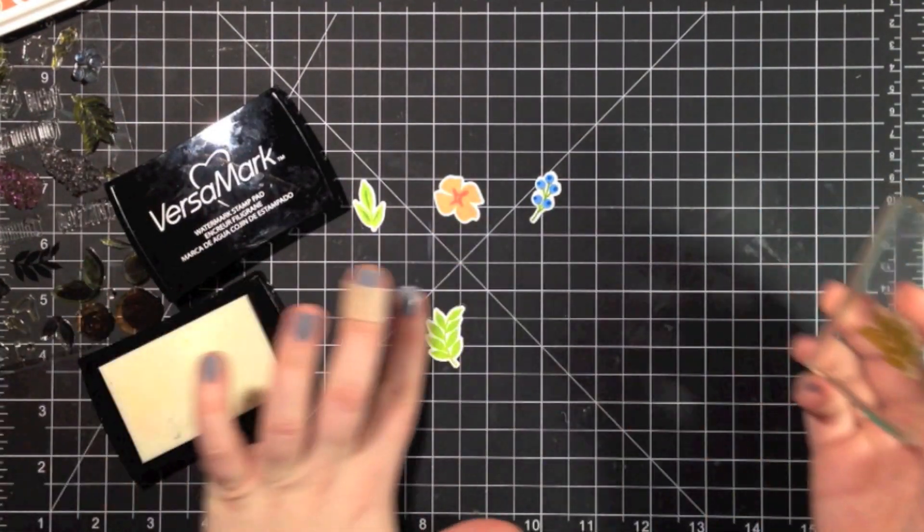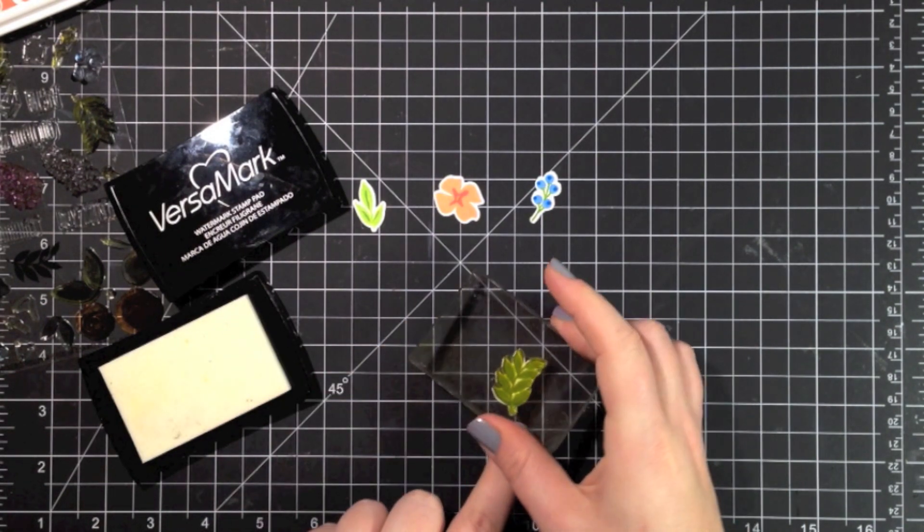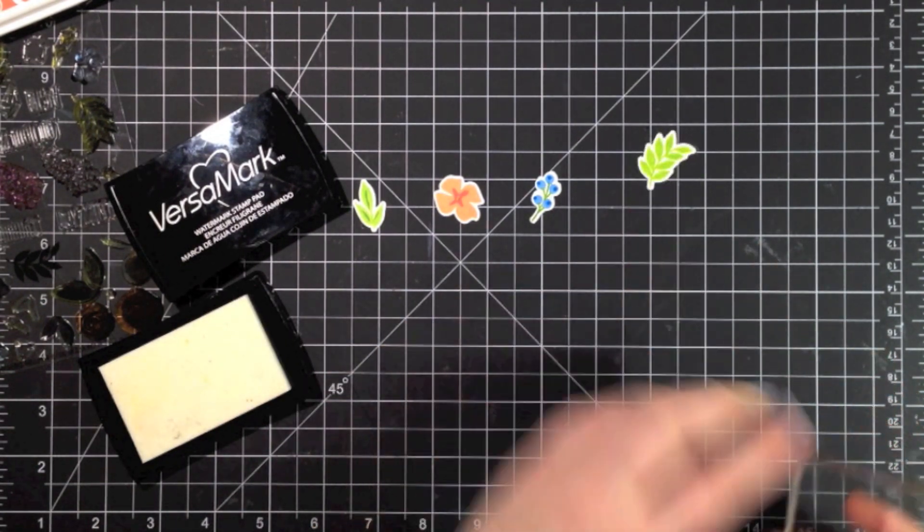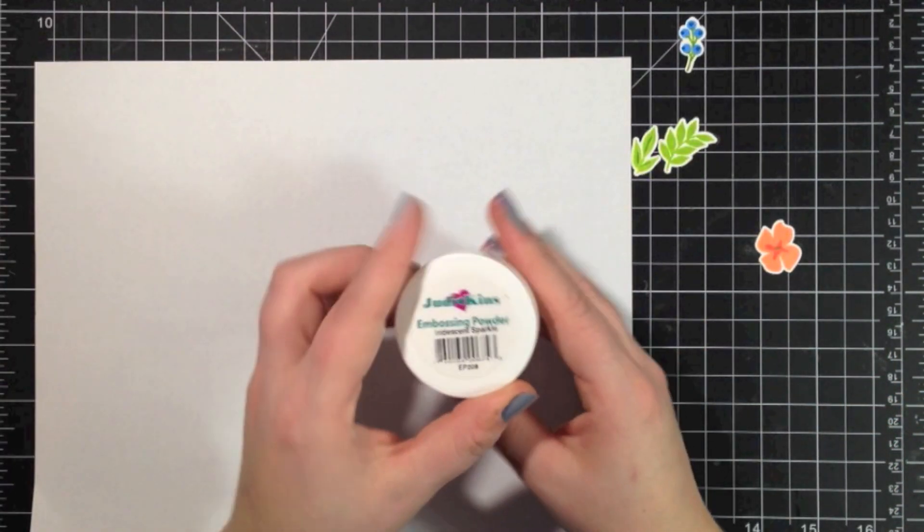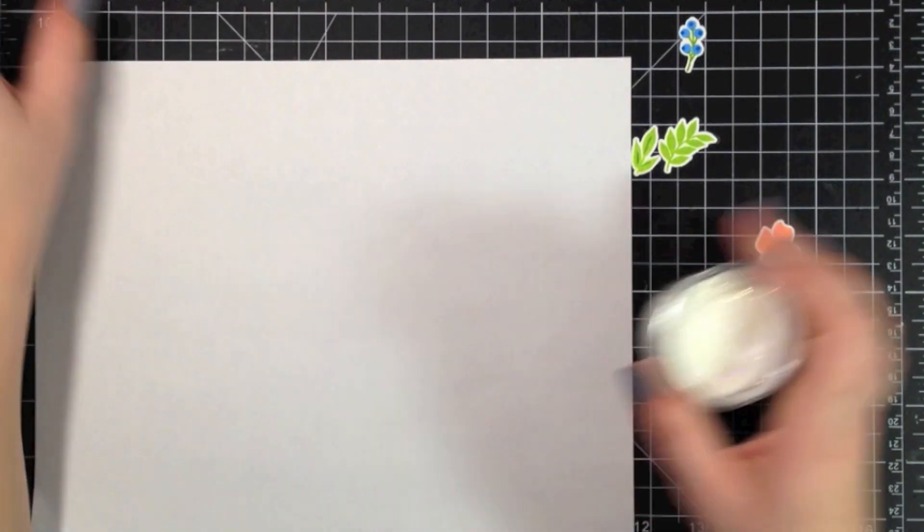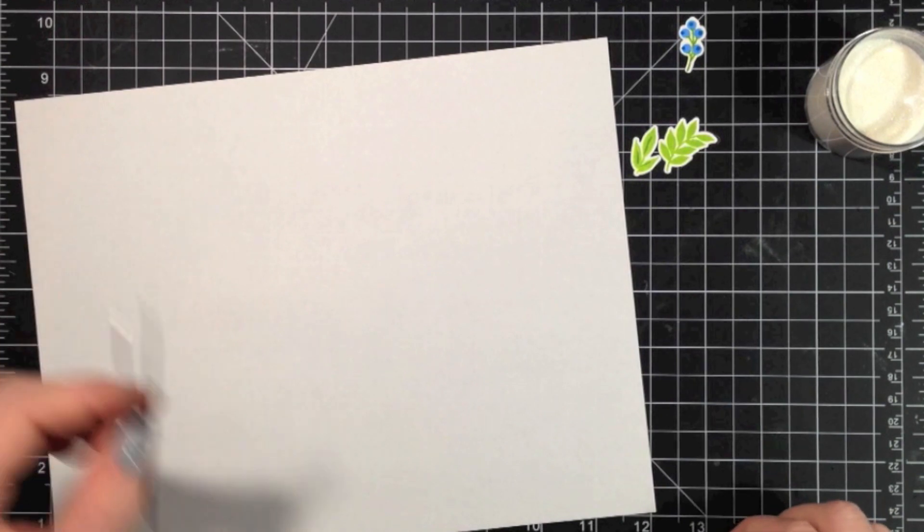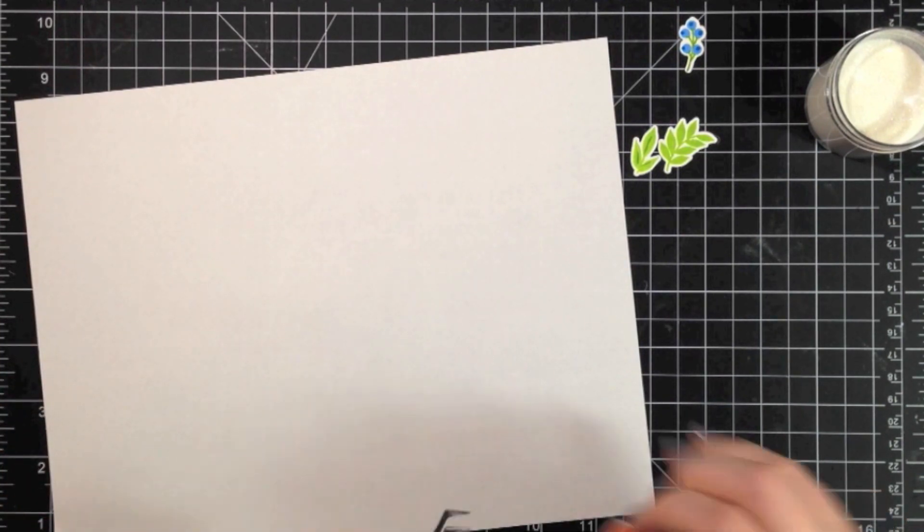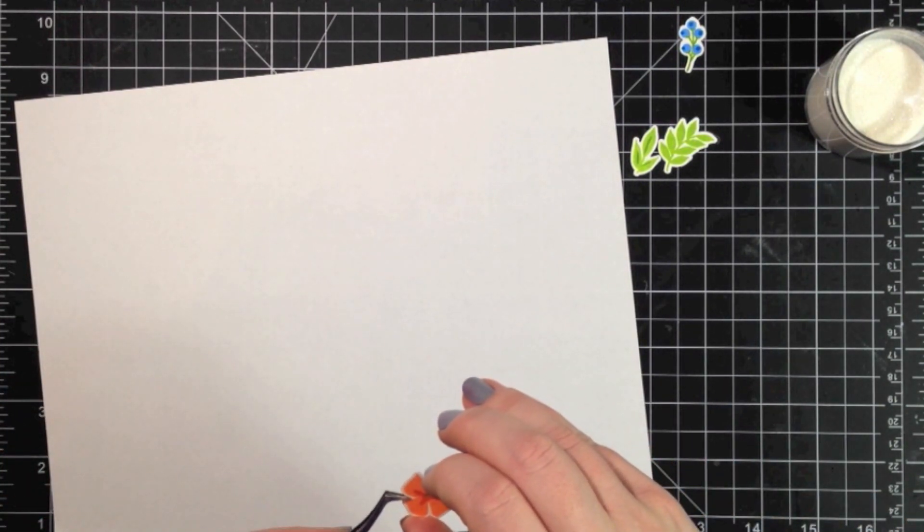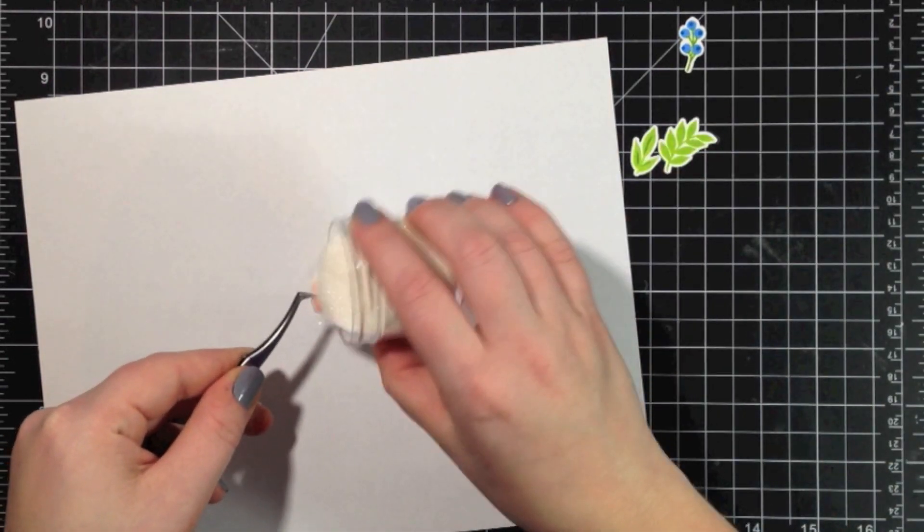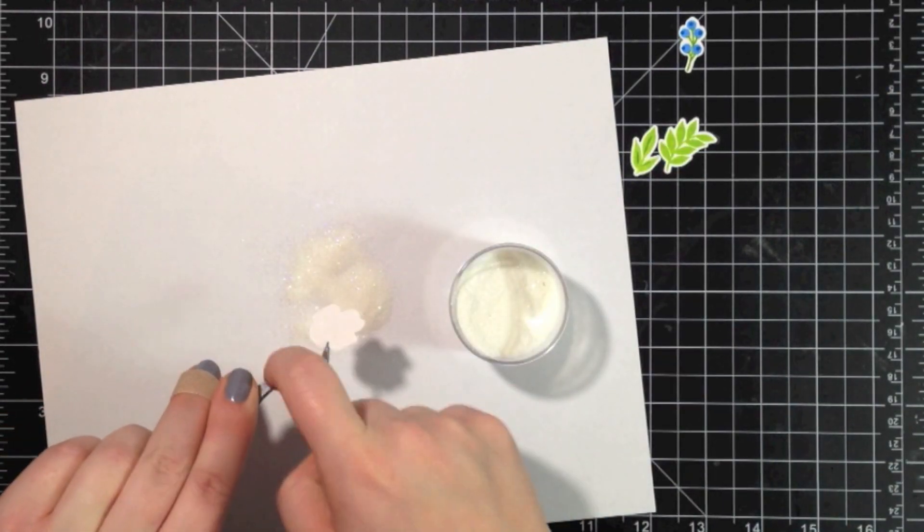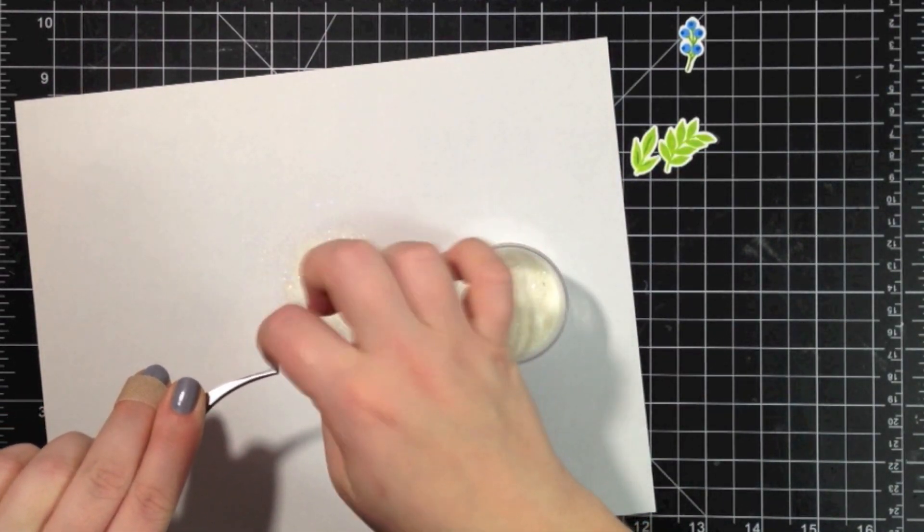So now moving on to the next part of this sparkly bouquet, we're going to take the solid images that we used originally and stamp over those images once again, but this time with Versamark ink. What that's going to do is coat the whole image in Versamark and allow you to put some embossing powder on there.